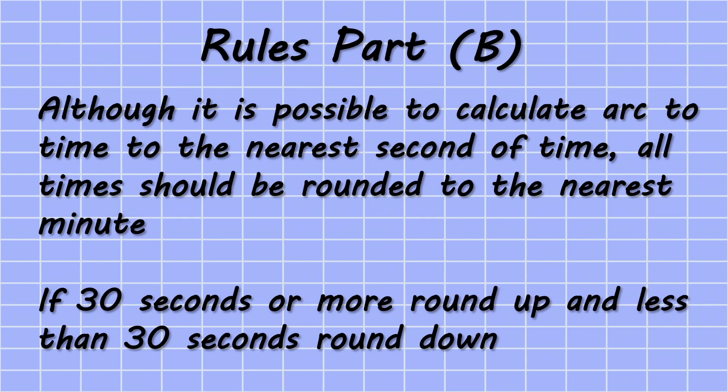Although longitude can be converted to time to the nearest second, this is not required. The convention says that all values of arc to time should be rounded to the nearest minute. If any seconds are present: if 30 seconds or more, it should be rounded up to the nearest minute; if less than 30 seconds, it should be rounded down.